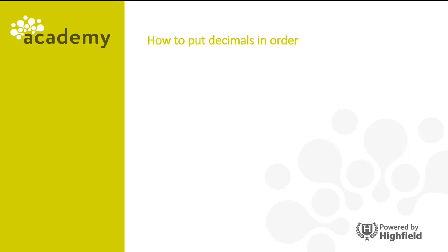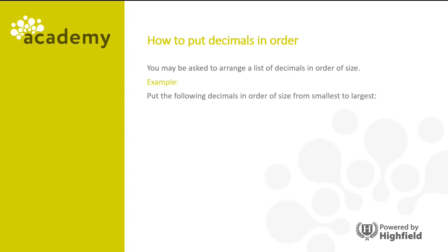So let's look at how to put decimals in order. You might be asked to arrange a list of decimals in order of size. For example, put the following decimals in order of size from smallest to largest: 1.6, 0.65, 0.658 and 0.068.